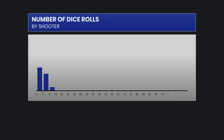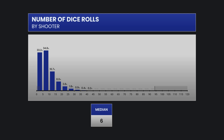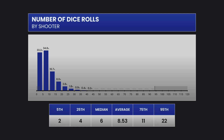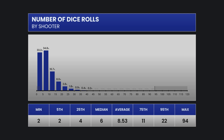For each shooter, how long did they actually hang on to the dice? The median is 6, so 50% of the shooters roll the dice more than 6 times and half of them roll fewer than 6 times. The average is 8.53. The middle 50% range between 4 and 11 rolls, and the middle 90% are between 2 and 22. The minimum is 2 — that's where you set a point and then get a 7 out — and the maximum in this simulation was 94 rolls for a single shooter.